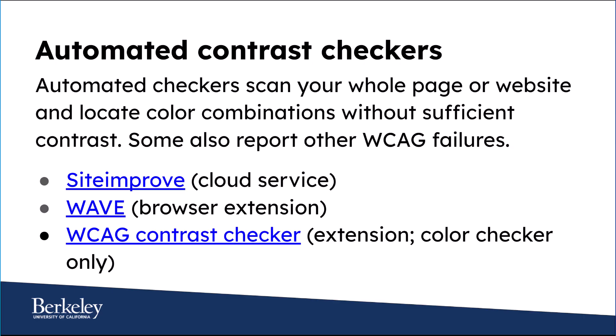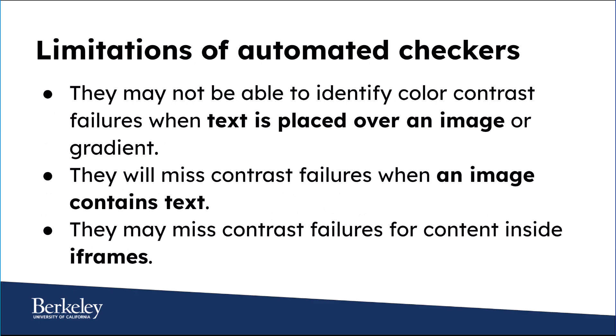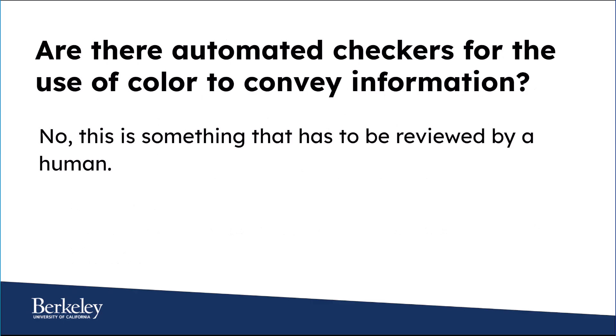Automated checkers can scan a whole web page or website and locate color combinations that lack sufficient contrast. Site Improve and Wave will also report other WCAG failures. You might be wondering if you need to use more than one color contrast checker — the answer is probably yes. Automated checkers are great at scanning a lot of elements and finding color contrast issues in existing content. Manual color contrast tools are helpful when choosing colors while designing content and finding alternatives. You should be aware of the limitations of automated checkers: they may not be able to identify color contrast failures when text is placed over an image or a gradient, they will miss contrast failures when text is in an image, and they may miss contrast failures when content is inside iframes. Automated checkers also cannot look for instances of using color to convey information — this is something that a human needs to check for.